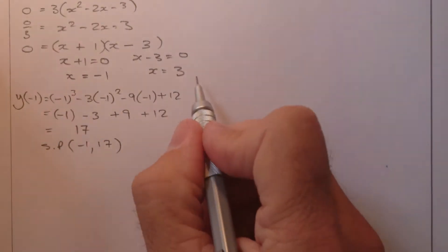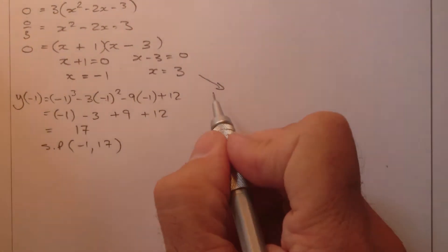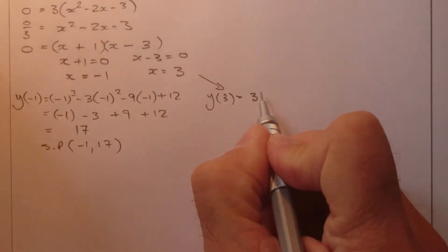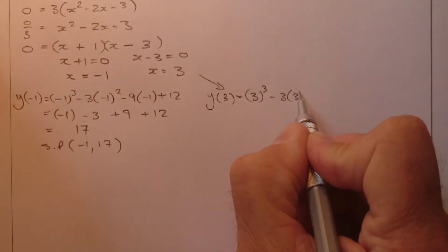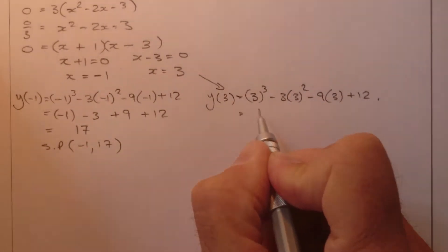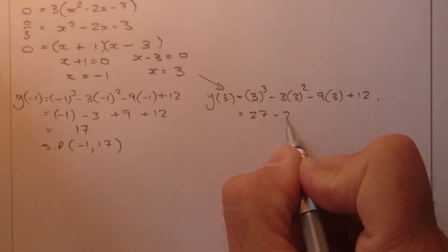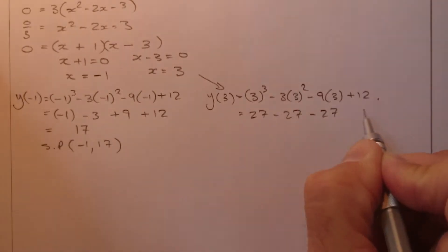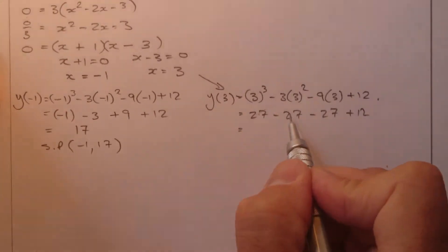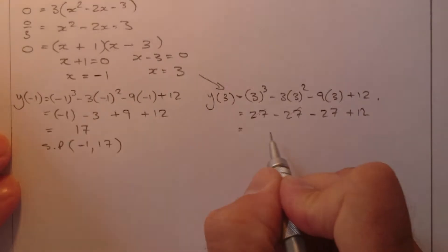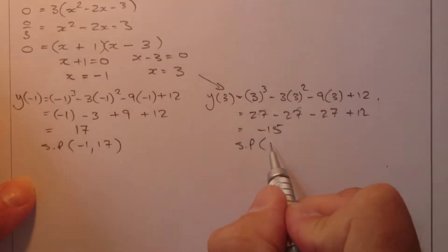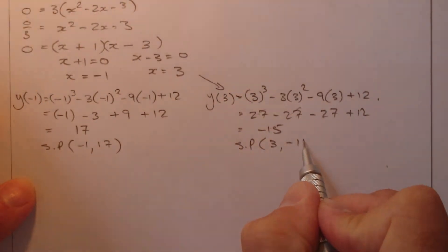Now I'll substitute x equals 3 into the equation: 3 cubed minus 3 times 3 squared minus 9 times 3 plus 12. Working through: 27 minus 27 minus 27 plus 12. The first two terms cancel, leaving minus 27 plus 12, which gives minus 15. So my other stationary point has coordinates 3, minus 15.